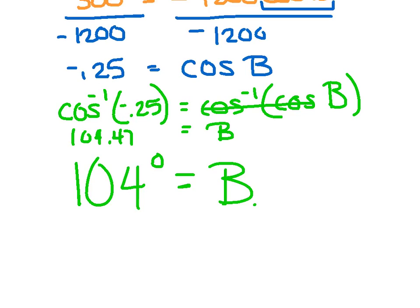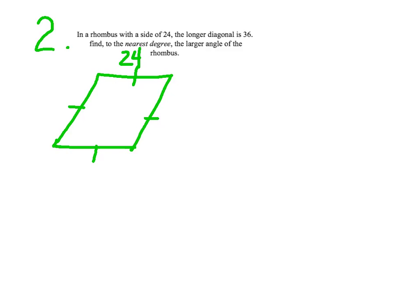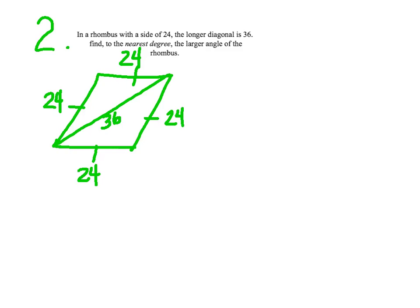The setup's the same — it's just taking your time trying to solve for B. Let's try another one. Example 2: In a rhombus with a side of 24. A rhombus is like a square that's been tilted, and all the sides are congruent, so I can label everybody 24. The longer diagonal is 36, so draw the longer diagonal in and label it 36. Find to the nearest degree the larger angle of the rhombus. The larger angle is across from the larger side, so looking at my triangle sides — 24, 24, 36 — clearly 36 is the largest, so the angle opposite is the one we're looking for.